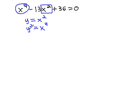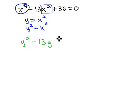So now, instead of x to the 4th, we can replace that with y squared. Minus 13, and instead of x squared, we can replace that with y, plus 36 equals 0. We now have a quadratic equation that we can solve.